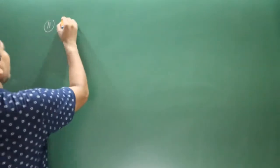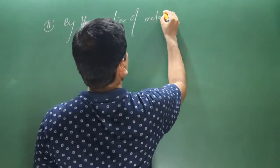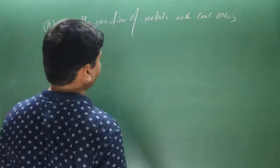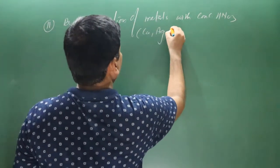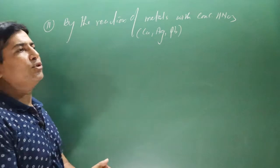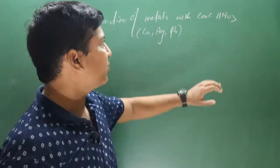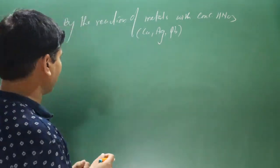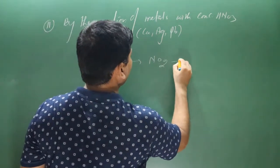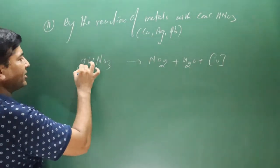The second preparation reaction is by the reaction of metals with a concentrated solution of nitric acid. Metals can be copper, silver, or lead. When we use a highly concentrated solution of nitric acid, it releases nitrogen dioxide by releasing nascent oxygen because it is a strong oxidizing agent.